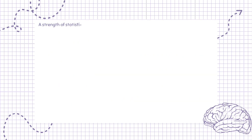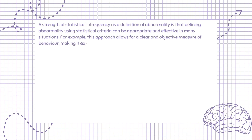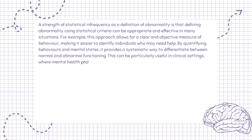A strength of statistical infrequency as a definition of abnormality is that defining abnormality using statistical criteria can be appropriate and effective in many situations. For example, this approach allows for a clear and objective measure of behavior, making it easier to identify individuals who may need help. By quantifying behaviors and mental states, it provides a systematic way to differentiate between normal and abnormal functioning. This can be particularly useful in clinical settings, where mental health professionals can use statistical data to inform diagnoses and treatment plans.